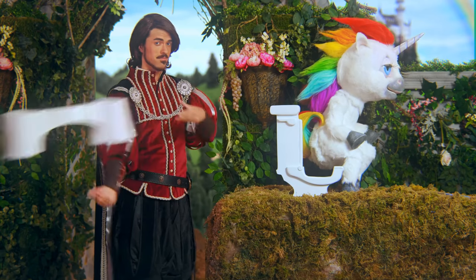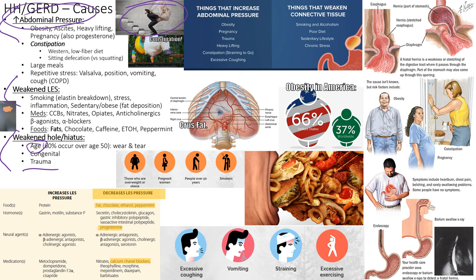Constipation is a big common theme today — increased intra-abdominal pressure from constipation pushes things upward and downward, causing things to pop out where they shouldn't. This can cause hemorrhoids, or diverticula in the sigmoid colon — diverticulosis is just a poppage of a weak area of the colon from excess pressure.